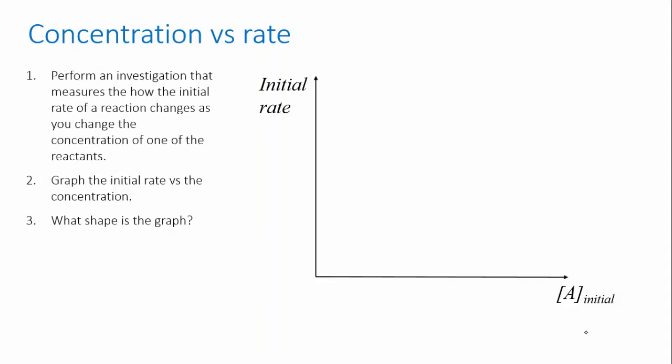So imagine I have a reaction and one of its reactants is called A. I vary the concentration of A and I collect some data on the initial rate for each concentration, keeping everything else constant. I then make a new graph using axes like this, and I look at the shape of the graph because this can tell me some important information about the reaction.